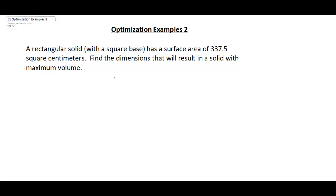This video is going to look at two more examples of optimization problems. Our first example says we have a rectangular solid with a square base that has a surface area of 337.5 square centimeters. We want to find the dimensions that will result in a solid with a maximum volume — so we want to maximize the volume.